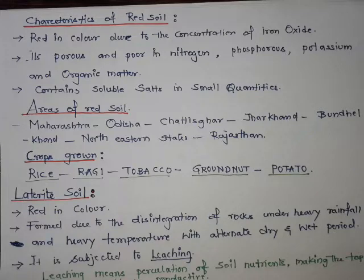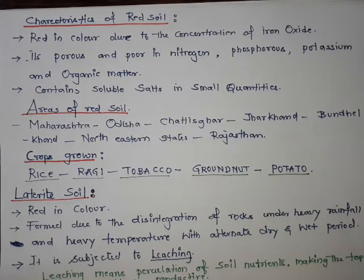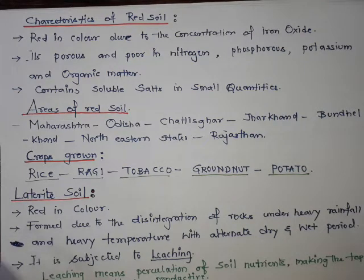A common board exam question is: how can red soil be made suitable for agriculture? Red soil can be made suitable for agriculture by making use of fertilizers — either chemical fertilizers or organic fertilizers.